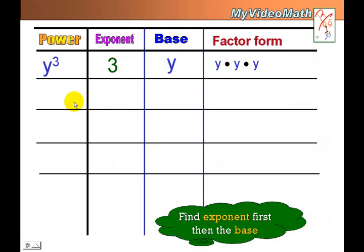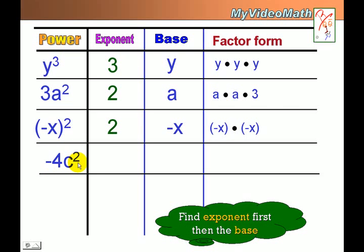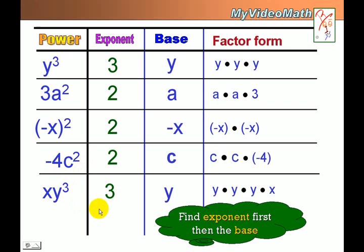Let's look at more examples. For each power, identify the exponent and the base. For one example, the base includes times negative 4. For another, the base includes a variable times x. You get the idea — practice identifying the exponent and base for each expression.